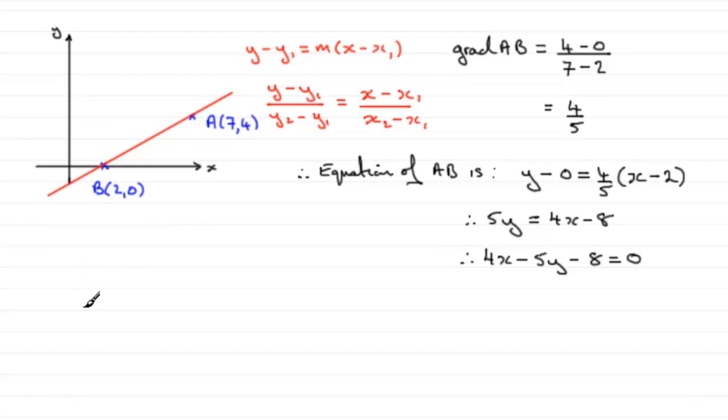then what we've got is that Y minus Y2, sorry, Y minus Y1, I should say, which would be the 0 here. Y minus 0, all divided by Y2 minus Y1, so that would be 4 minus the 0. Okay? Equals X minus X1, so that would be the 2 here, all divided by X2 minus X1, so that would be 7 minus 2. And if we just leave that as Y on the top there, over 4 equals X minus 2 over 5.